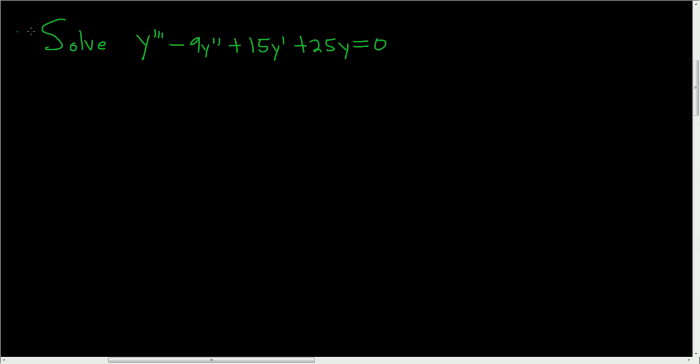We have a linear differential equation with constant coefficients, and it happens to be homogeneous because the right-hand side is equal to 0. Let's go ahead and solve this.